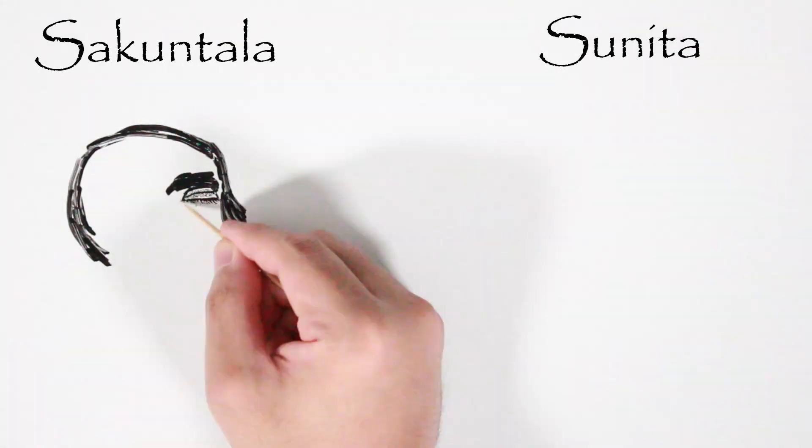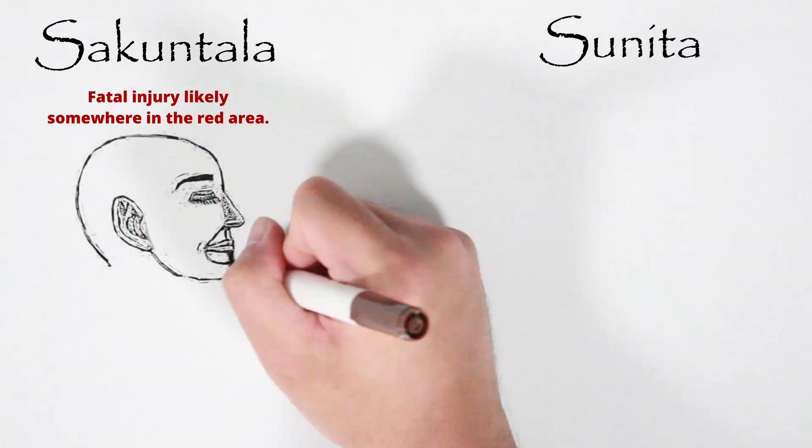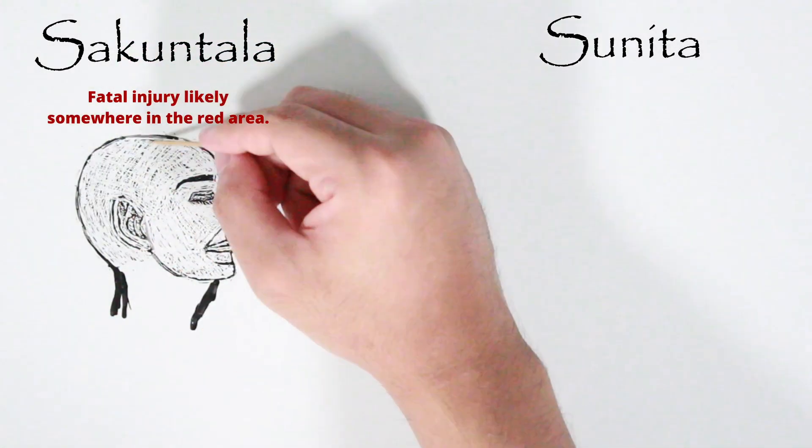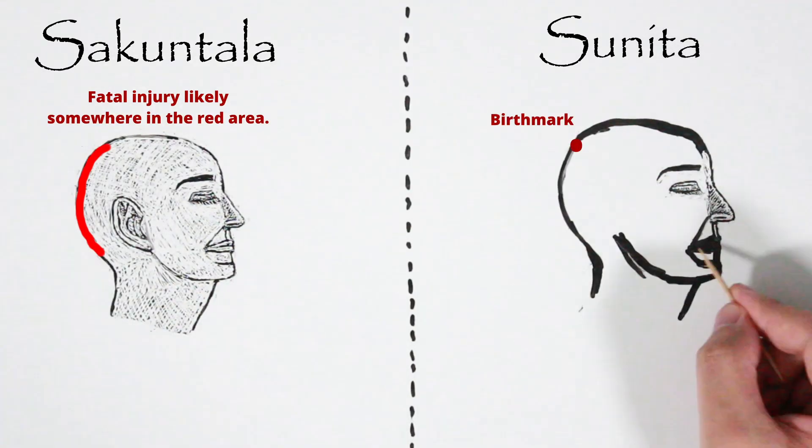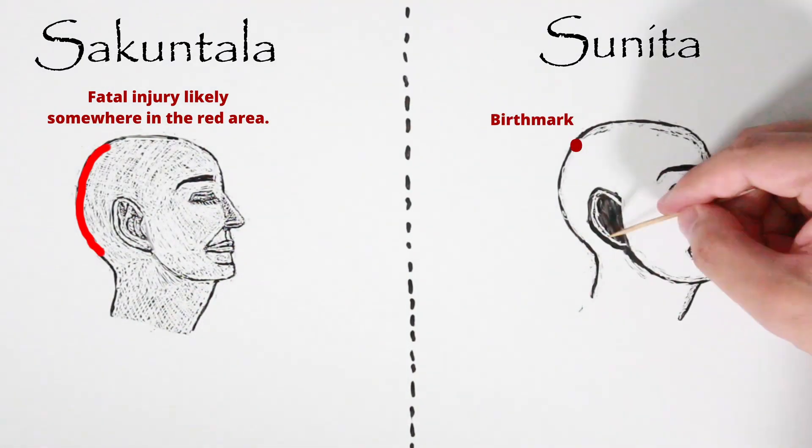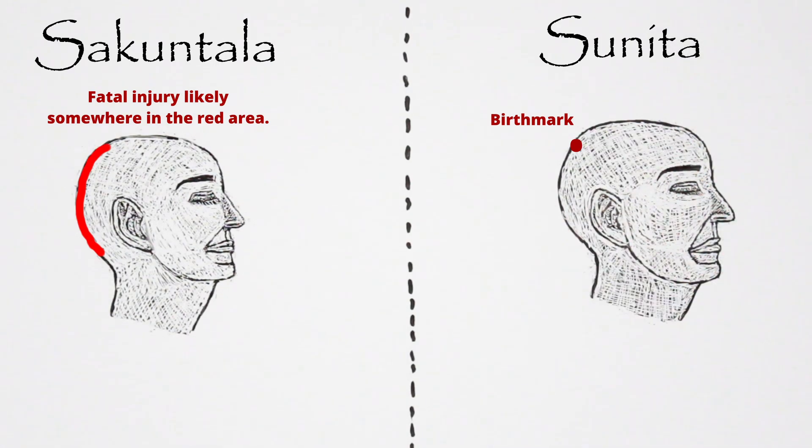Though the hospital records didn't state which specific part of the head got injured in the fall, the researcher in this case believed the location of Sunita's birthmark matches the location of Sakuntala's fatal injury because the hospital records stated that Sakuntala's right ear was bleeding after the fall, which is an indication there was a fracture to the base of the skull.